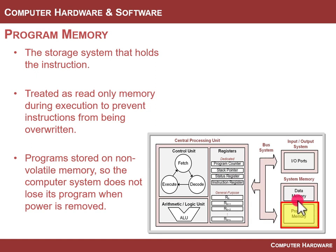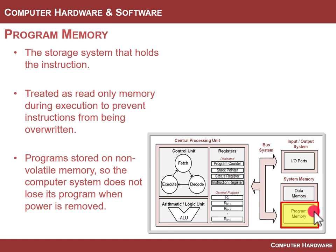When the computer executes, it treats program memory as read-only. Your program sits there and you don't override it during operation — the operating system will not allow you to do that. On a computer such as Windows or Mac, most programs are actually stored on non-volatile memory, which means when you turn off the computer they stay there. For now, you can think of program memory as protected or read-only during operation.